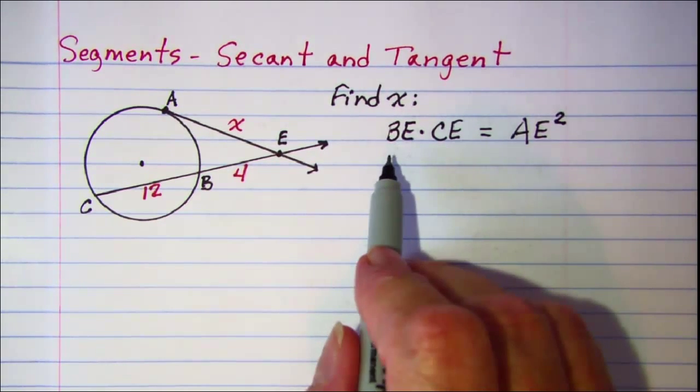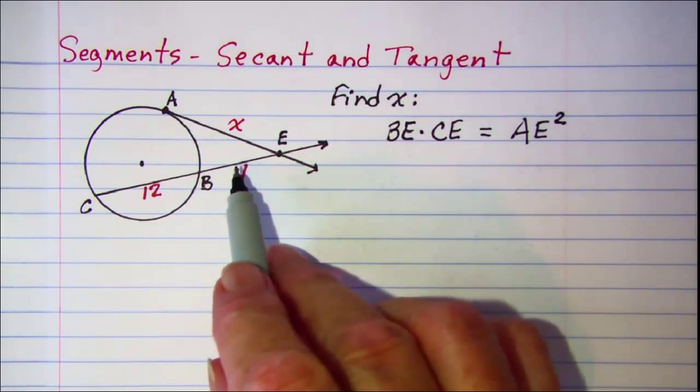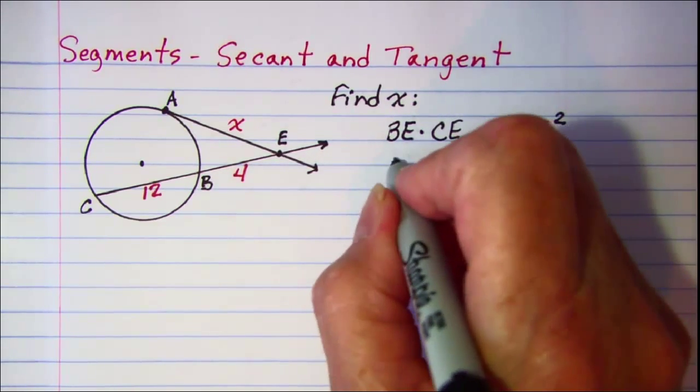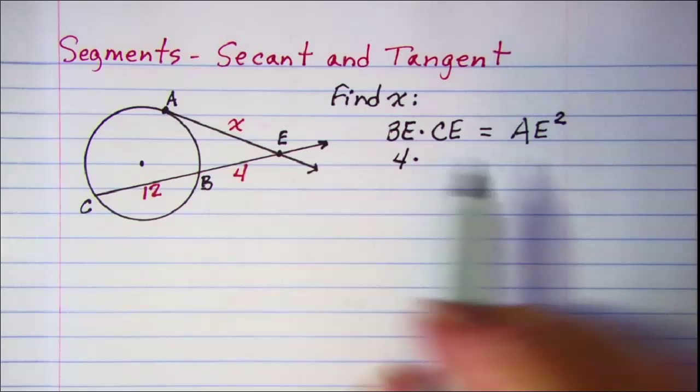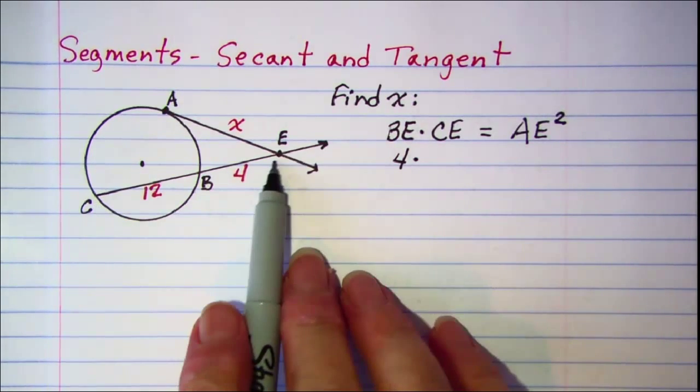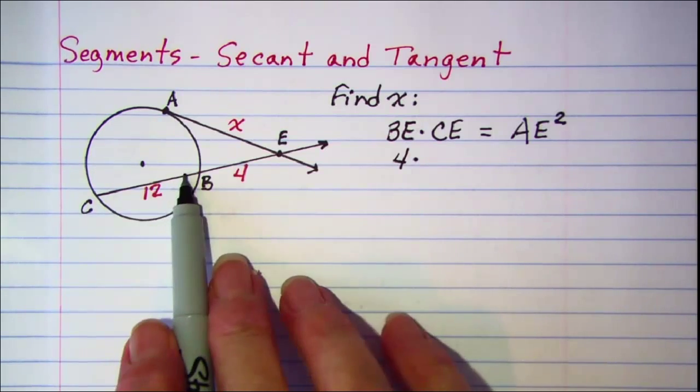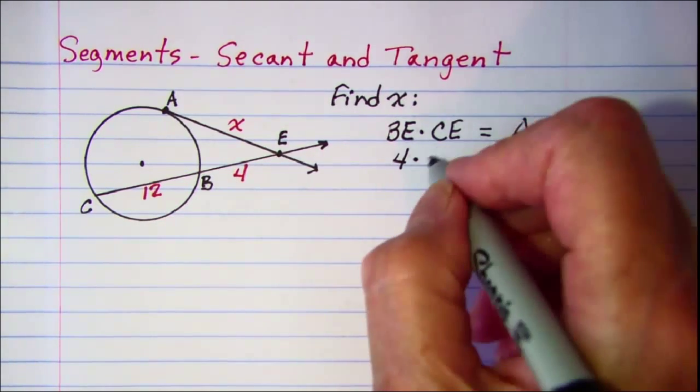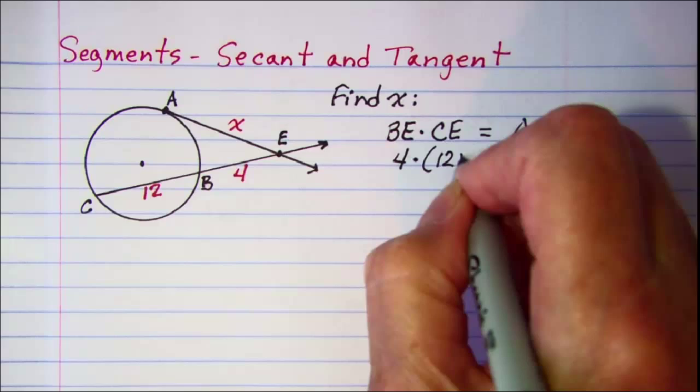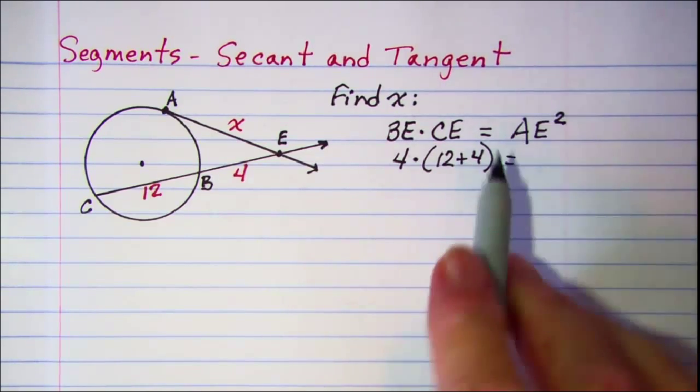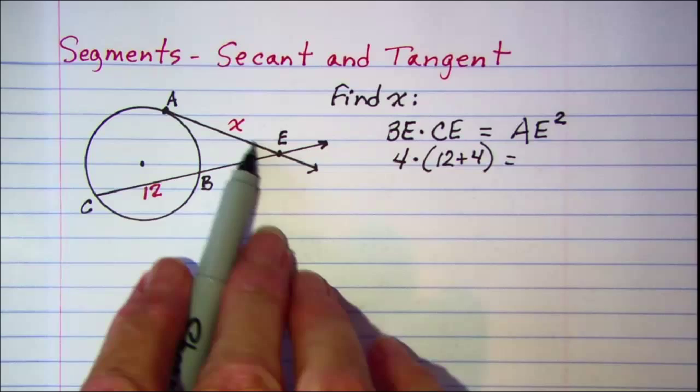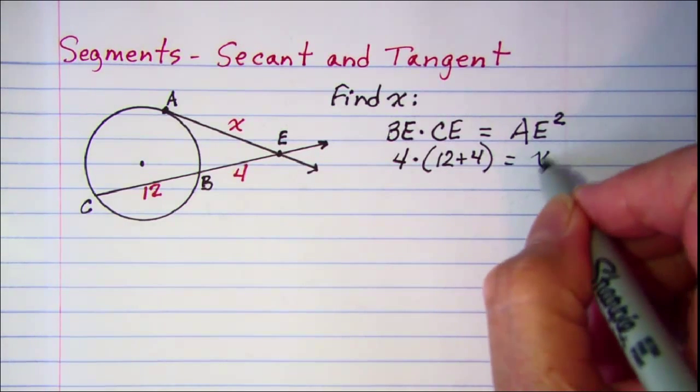Now let's put our values in. Segment BE measures 4. Segment CE is the sum of the two pieces, so 12 plus 4, and that will equal AE which is x squared.